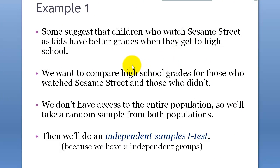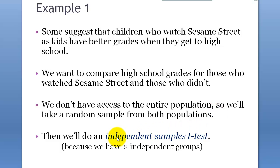Let's work on an example problem for the two independent sample t-test. Some suggest that children who watch Sesame Street as kids have better grades when they get to high school. We want to compare high school grades for those who watched Sesame Street and those who didn't. We don't have access to the entire population, so we will take a random sample from both populations — the Sesame Street group and the non-Sesame Street group — and then do an independent sample t-test.